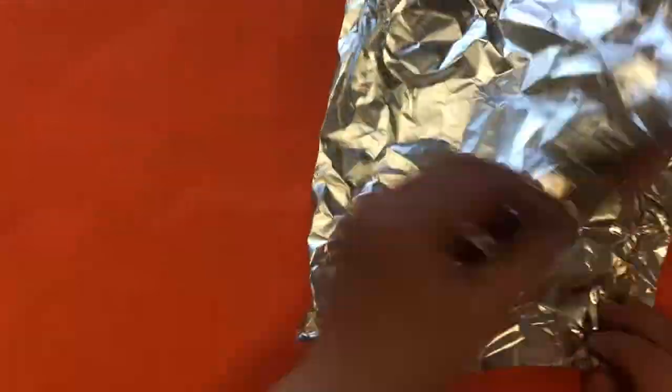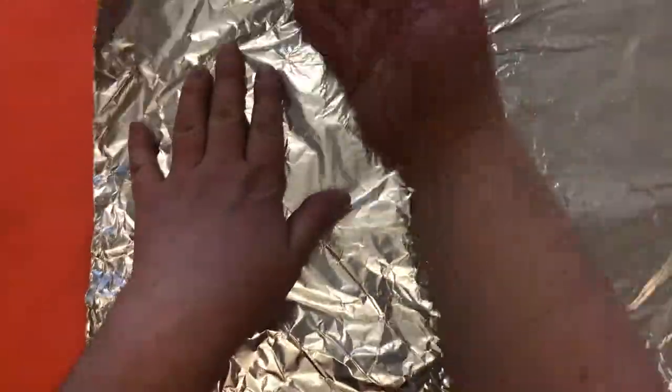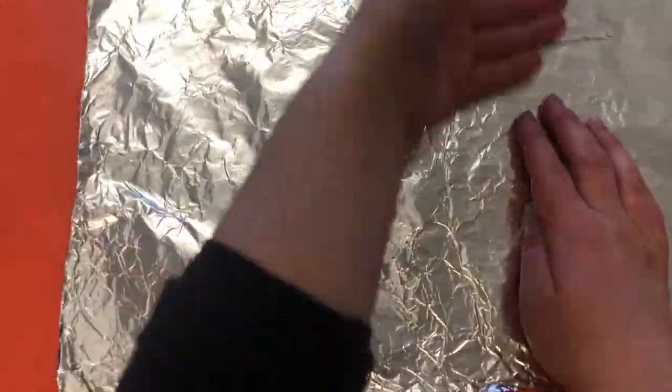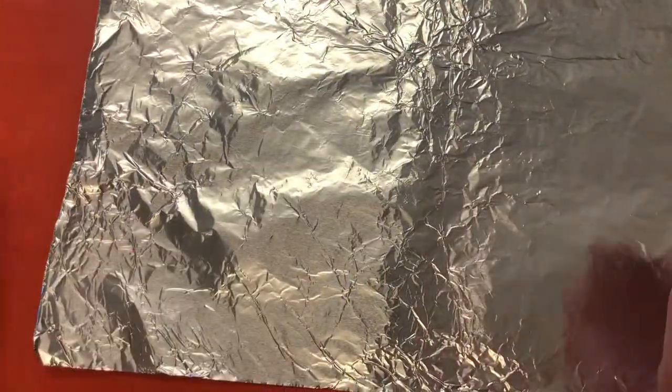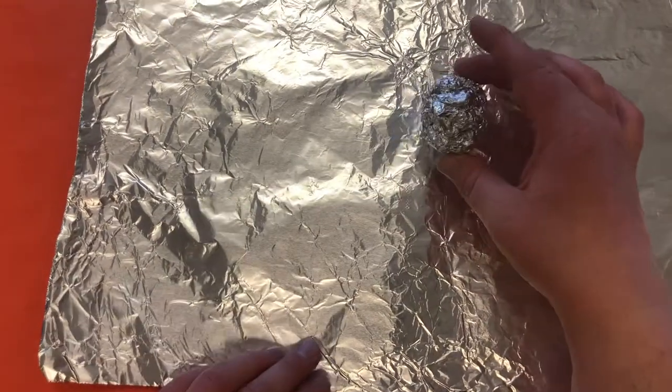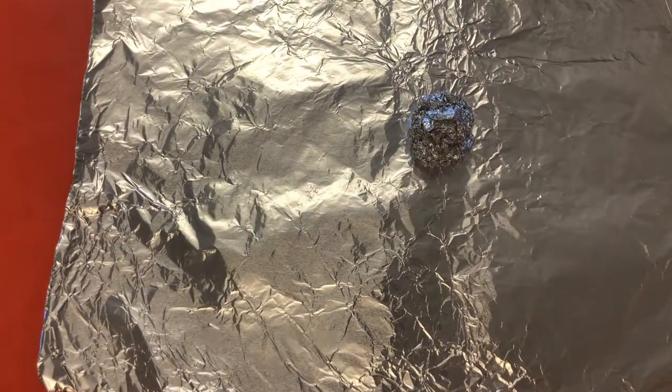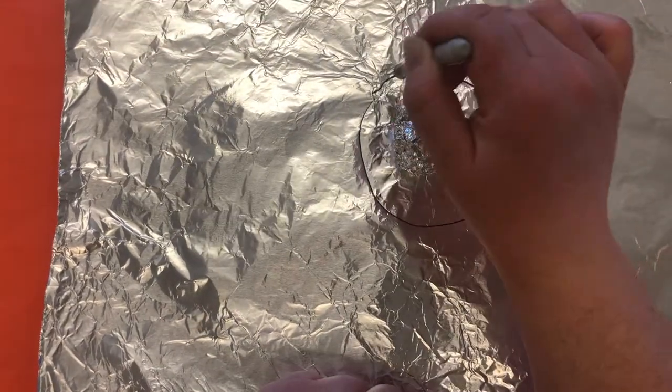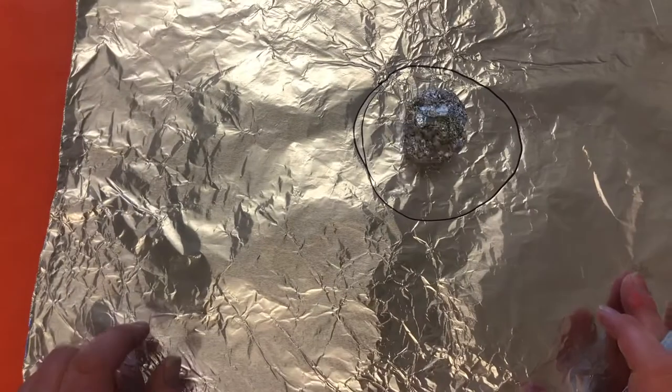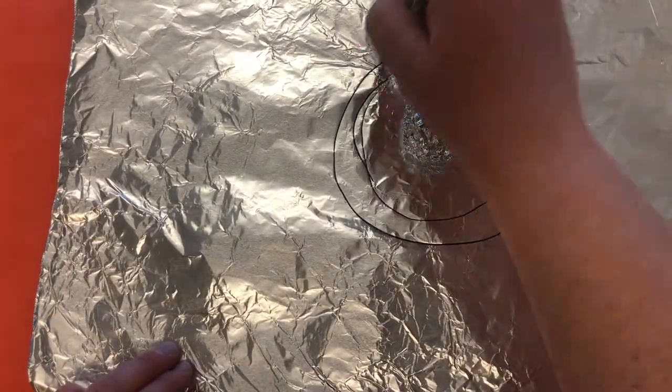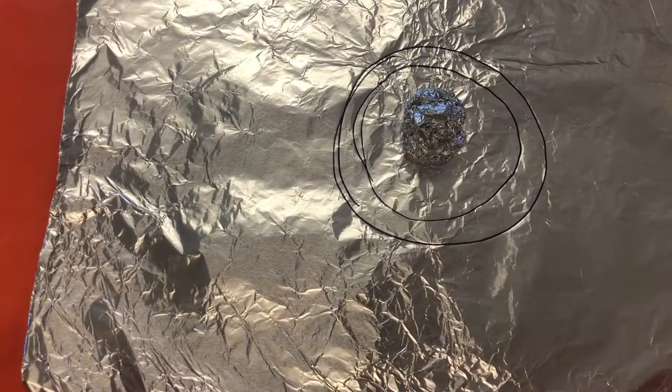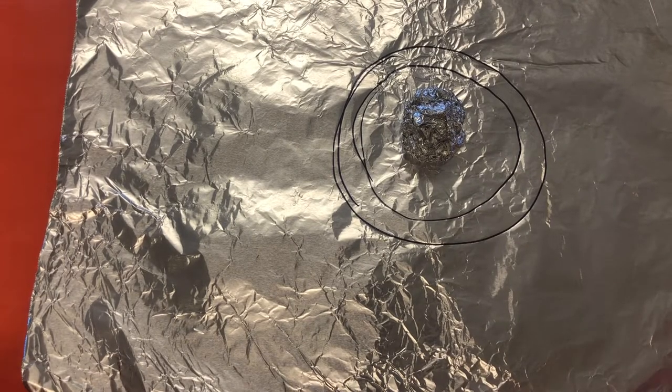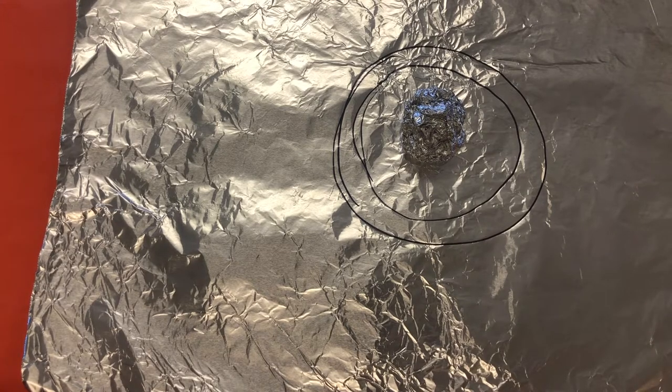All right, now you're going to take your other piece of tin foil and you're going to unfold it. Smooth it out. And I'm going to put the ball in the middle here. And I'm just going to draw a circle around, maybe I'm going to make it a little bit bigger around that ball. Now think to yourself, how many legs does a spider have? You said eight, you are correct.